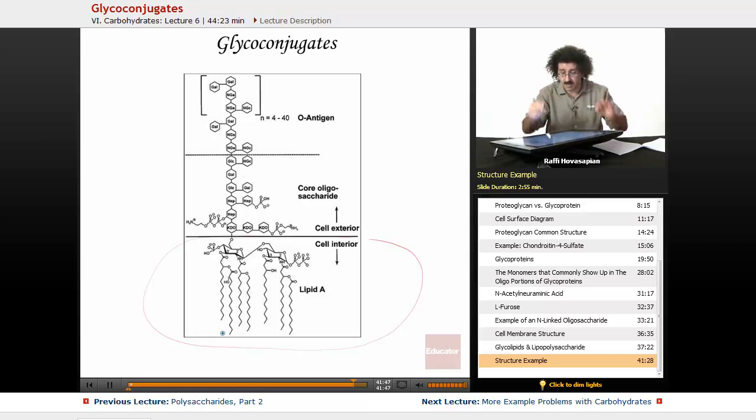Inside the cell membrane, cell interior exterior, you have these lipids - these long carbon chains, these are fats. These lipids that are inside the cell membrane are attached to sugar units, and on the number six carbon, through an O-glycosidic bond, is attached to several other sugars.